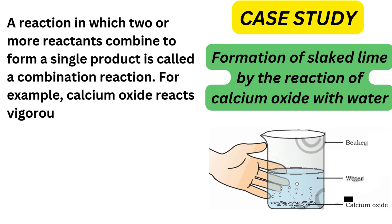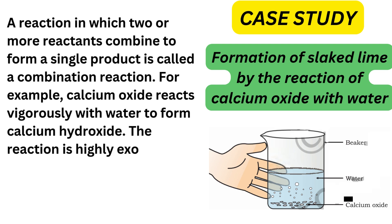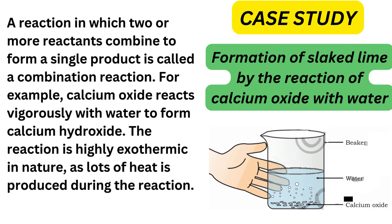For example, calcium oxide reacts vigorously with water to form calcium hydroxide. The reaction is highly exothermic in nature, as lots of heat is produced during the reaction.